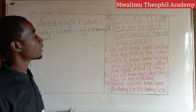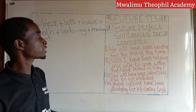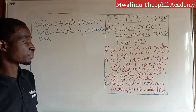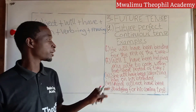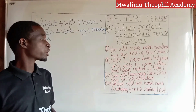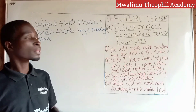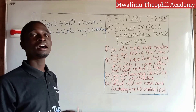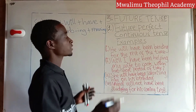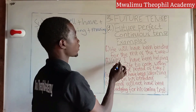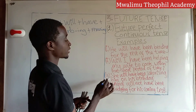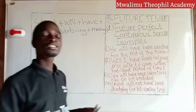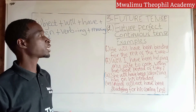Example number one: he will have been bending for the rest of the time. Number two: will I have been helping my wife to cook within that short period of time? Number three: she will have been surprising him on his birthday. Number four: man will not have been studying for his coming test. In all four sentences, after 'will' we have 'have been,' followed by the main verb ending with '-ing': bending, helping, surprising, studying. This is the way we construct sentences in future perfect continuous tense.